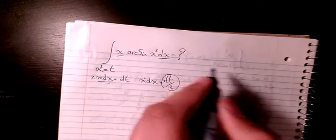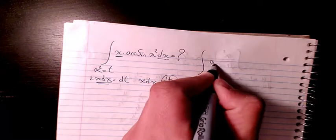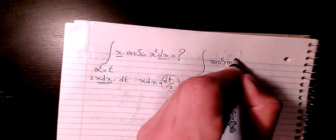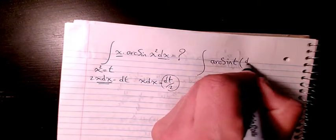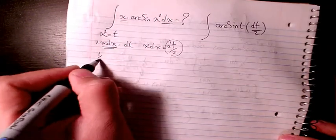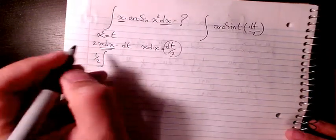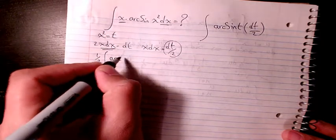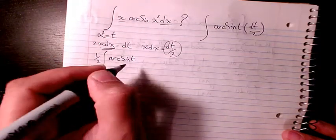So instead of these two parts I will write dt over 2, so it's gonna be arcsin(t) dt over 2, or 1 over 2 arcsin(t) dt.